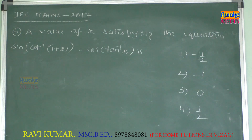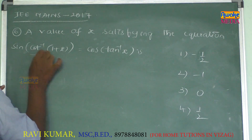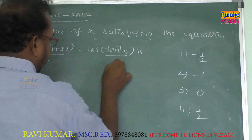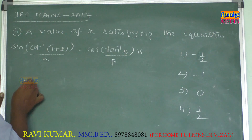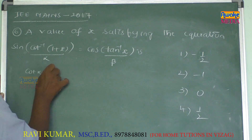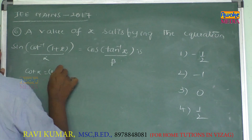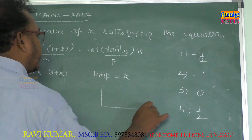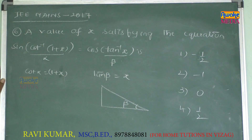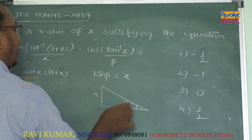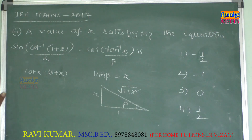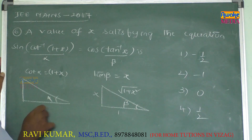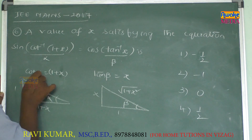Next: find x satisfying sin(cot⁻¹(1 + x)) = cos(tan⁻¹x). Let cot⁻¹(1 + x) = α, so cot α = 1 + x. Also let tan⁻¹x = β, so tan β = x. Drawing a right triangle: for angle α with cot α = 1+x, the hypotenuse is √((1+x)² + 1).